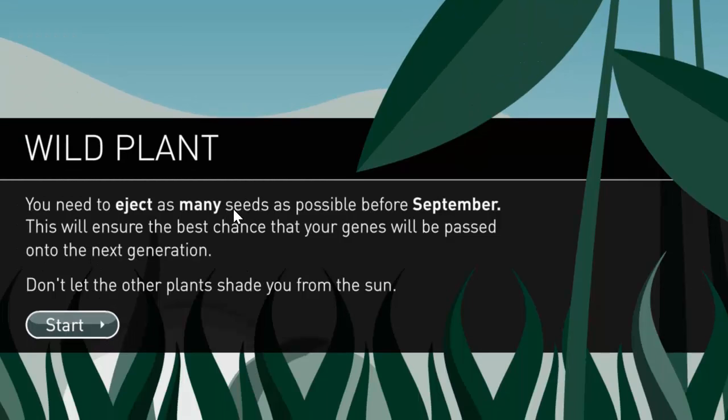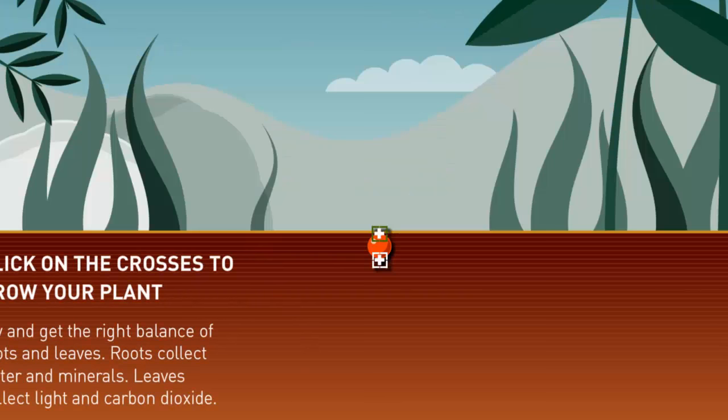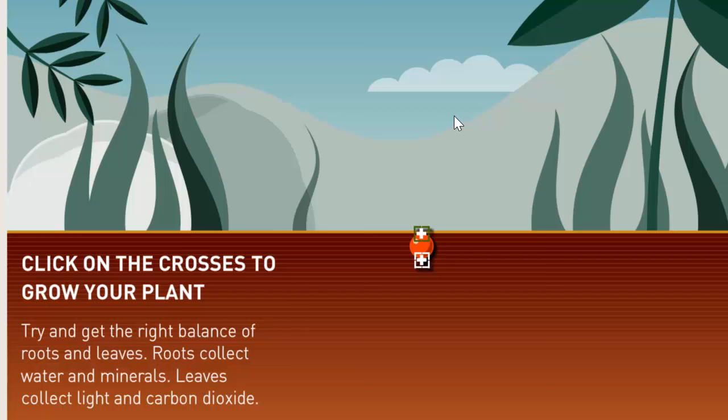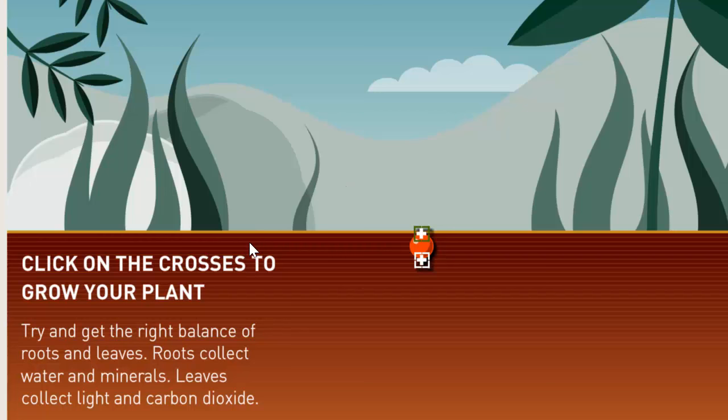Anyway, so wild plant. You need to eject as many seeds as possible before September. This will ensure the best chance that your genes will be passed on to the next generation. Don't let the other plants shade you from the sun. Now, the game is actually very realistic. It's kind of not just educational, but it's actually kind of fun at being educational, because it gives you a relatively fun gameplay, but it also teaches you quite a lot about how plants reproduce, how plants grow, what they need to grow, and also what dangers there are for them, and what factors influence their growth.